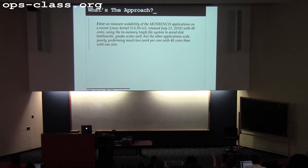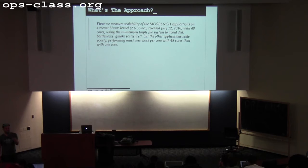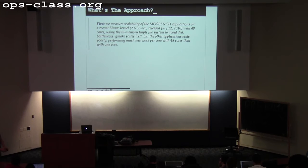They came up with this benchmark suite and ran it on a particular version of Linux with 48 cores. They used the in-memory tmpfs file system, because the point was to benchmark core kernel performance — they didn't want to introduce the file system as a bottleneck. All the benchmarks run in memory. Tmpfs is great if you have stuff that wants to act like a file but you want it to be really fast — the whole class website is hosted on tmpfs.